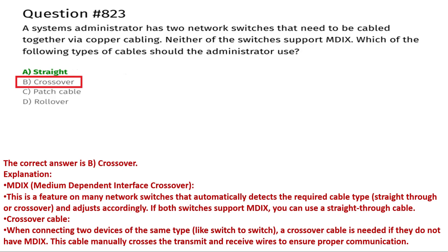The next question is: a system administrator has two network switches that need to be cabled together via copper cabling. Neither of the switches support MDI-X. Which of the following types of cables should the administrator use? Option A: straight, Option B: crossover, Option C: patch cable, Option D: rollover. The correct answer is Option B, crossover.